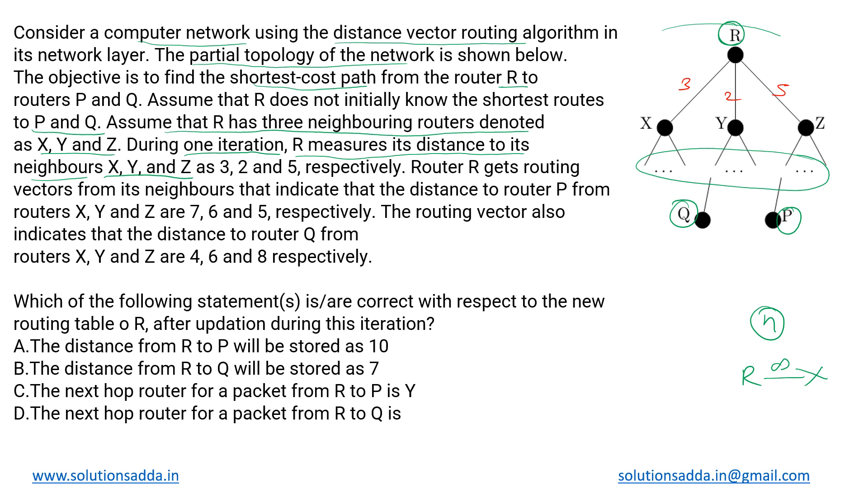Now router R gets the routing vectors from its neighbors. In DVR, all the neighbors exchange their distance vectors to each other. This routing vector is nothing but the distance vector itself. R will get the distance vectors from all of its immediate neighbors that is X, Y and Z.